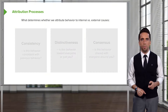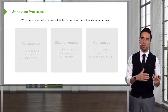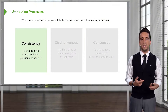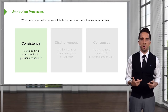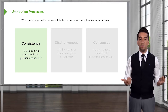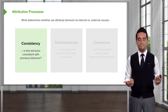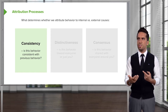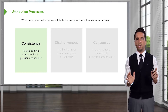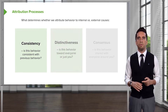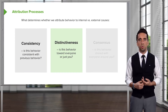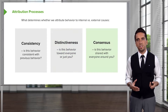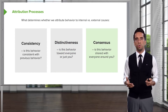What determines whether we attribute behavior to internal versus external causes? One factor is consistency — is this behavior consistent with previous behavior? Is this something that has happened before, or is this not like them? Then there's distinctiveness — is this behavior toward everyone or just you? And then consensus — is this behavior shared with everyone around you?